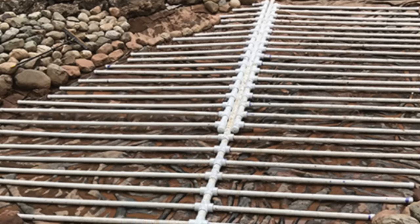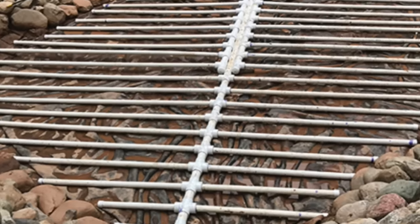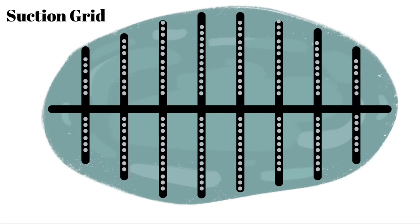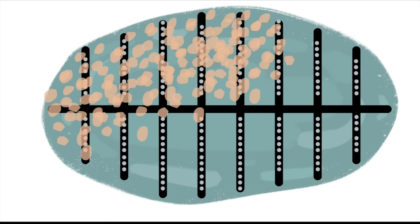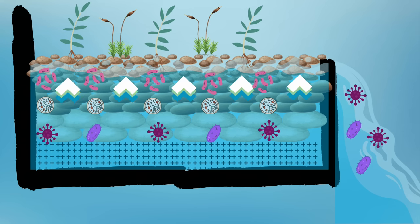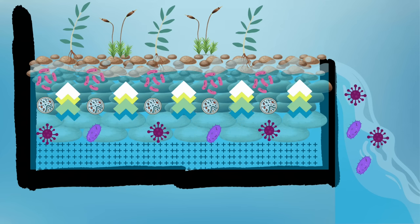Another type of filter is an under gravel or suction grid. This one utilizes an air pump rather than a submersible pump. It's basically a grid of pipes with holes drilled in, and pebble is placed over the pipes — again, this is the surface area for the bacteria. An air stone is placed in a vertical pipe that extends down below the horizontal grid. As air displaces the water inside the vertical pipe, water from the grid pipes replaces it, and then that water is replaced by water that has moved down through the bed of pebble. So in all three examples, the water is being moved through surfaces that are covered in bacteria.